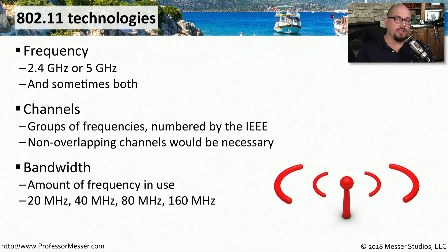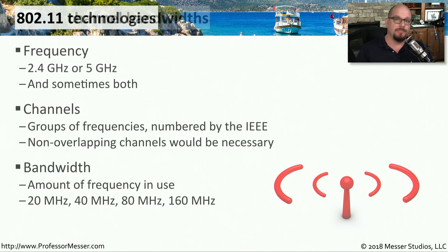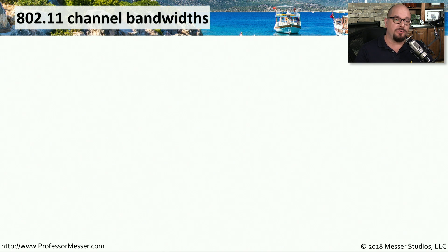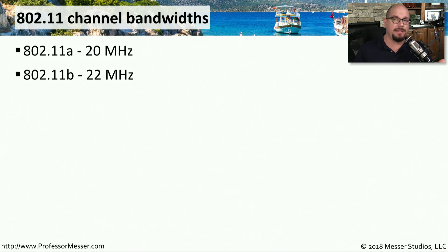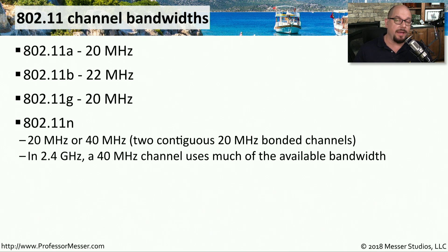Some wireless standards use a 20 megahertz block of frequencies to communicate. Others expand that bandwidth into 40, 80, and 160 megahertz blocks. The modulation used for these 802.11 standards tends to dictate how much bandwidth will be used. For example, 802.11a, 802.11b, and 802.11g used about a 20 megahertz channel bandwidth. With 802.11n, you have the choice between a 20 megahertz bandwidth, or you could double that to use a 40 megahertz bandwidth, which was two contiguous 20 megahertz bonded channels.